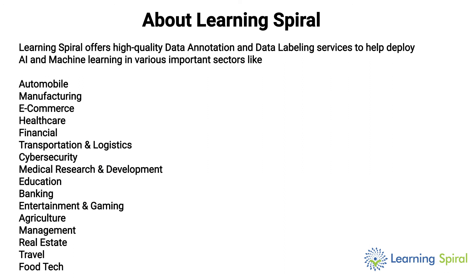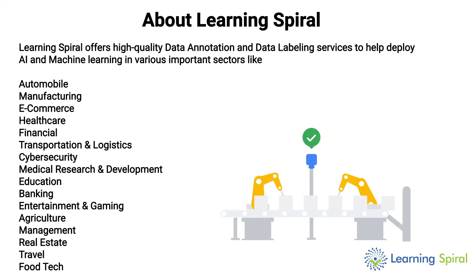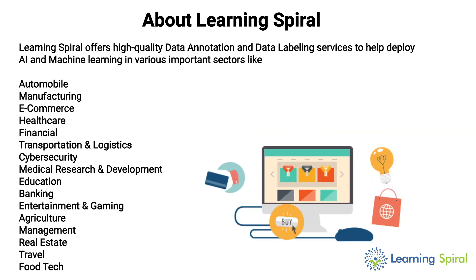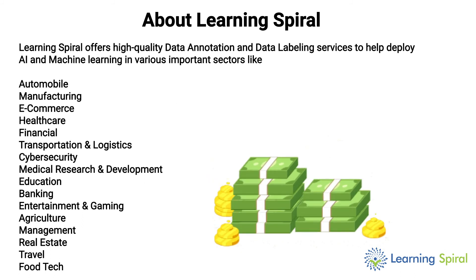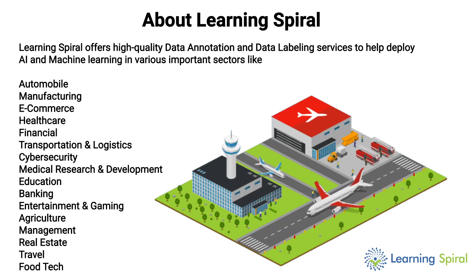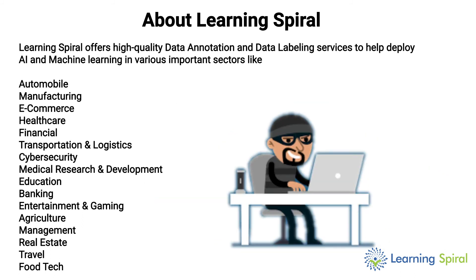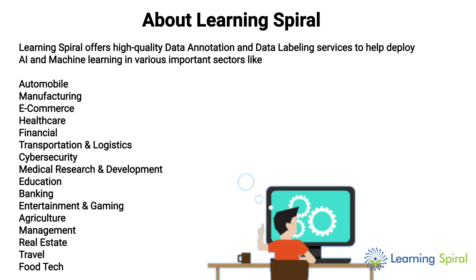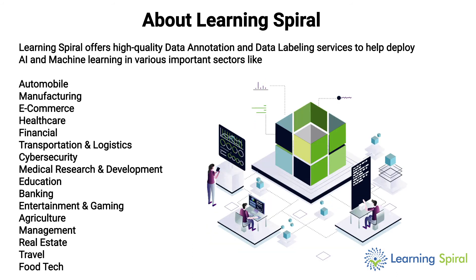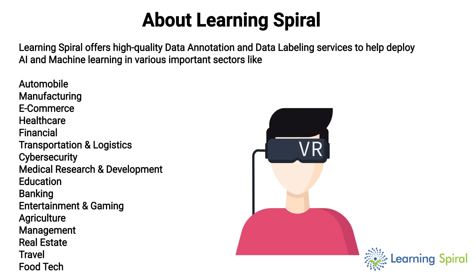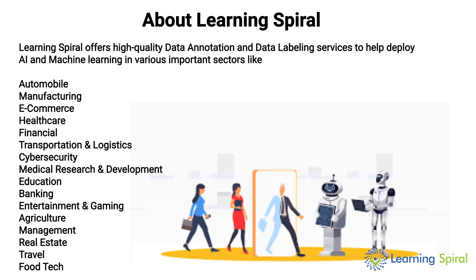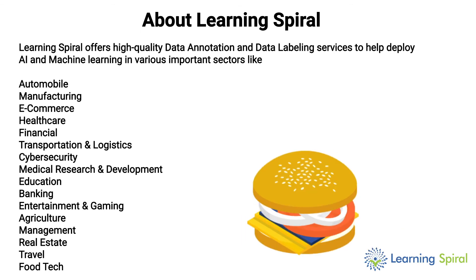Learning Spiral offers high quality data annotation and data labeling services to help deploy AI and machine learning in various important sectors like Automobile Manufacturing, E-commerce, Healthcare, Financial, Transportation and Logistics, Cybersecurity, Medical Research and Development, Education, Banking, Entertainment and Gaming, Agriculture Management, Real Estate, Travel, and Food Tech.